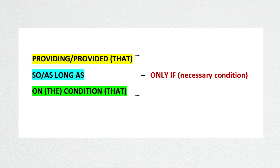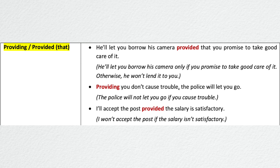Other alternatives we're going to look at are 'provided' or 'providing that,' 'so long as' or 'as long as,' and 'on condition that.' These are used to add emphasis on the condition that needs to be present so that something can happen or be done. In a way, these conjunctions make the condition more restrictive. For example: 'He will let you borrow his camera, provided that you promise to take good care of it.' This means he will let you borrow his camera only if you promise to take good care of it — otherwise, he won't lend it to you. So there is an emphasis on the condition.